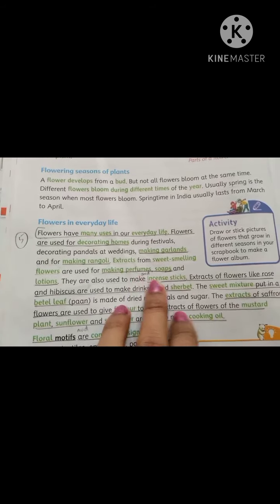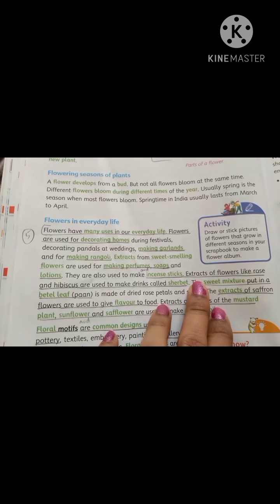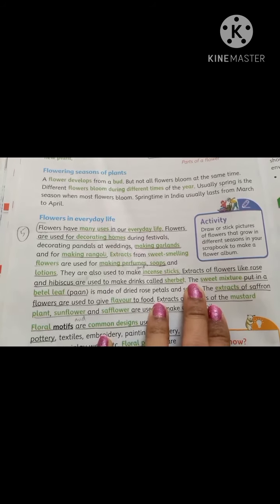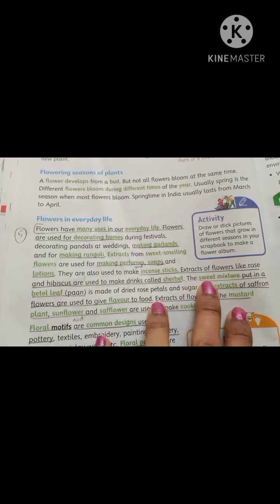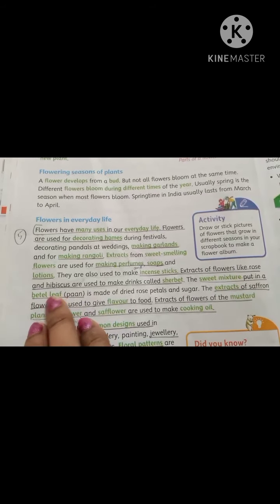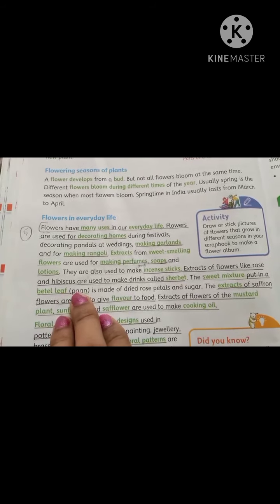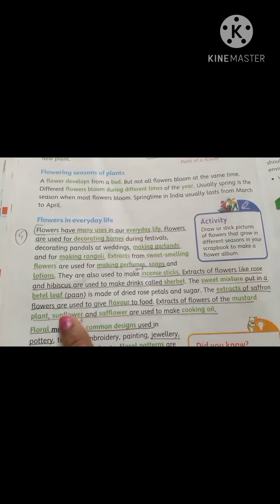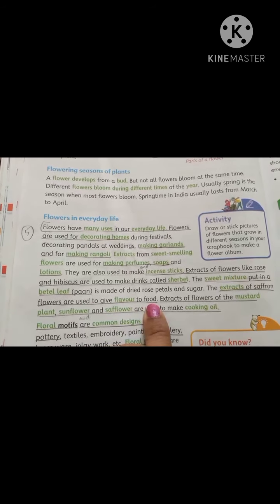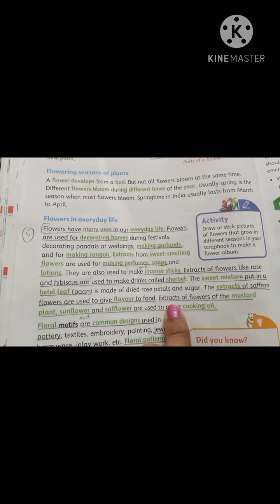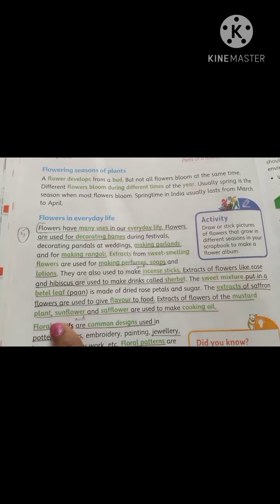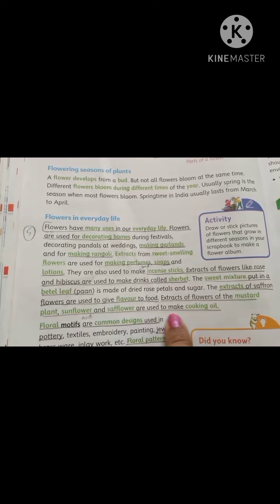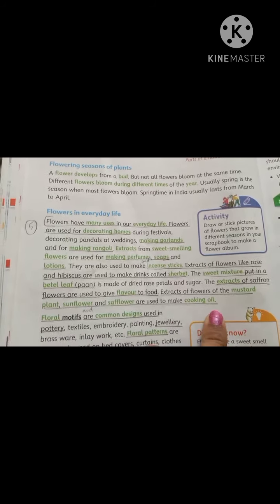Extracts of flowers like rose and hibiscus are used to make drinks called sharbat, and as a sweet mixture put in a betel leaf pan. The extracts of saffron flowers are used to give flavor to food. Extracts of flowers of the mustard plant, sunflower, and safflower are used to make cooking oil.